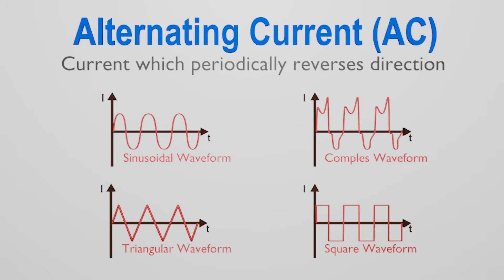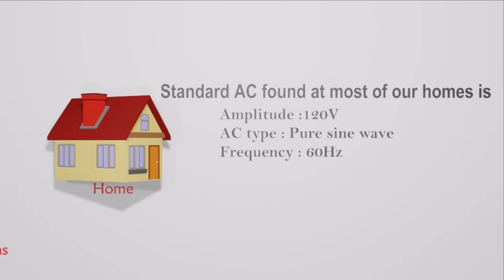AC waveforms can also take the shape of either square waves, triangular waves or any other complex shape. Standard AC found at most of our homes is a 120 volts amplitude pure sine wave with a 60 hertz frequency.